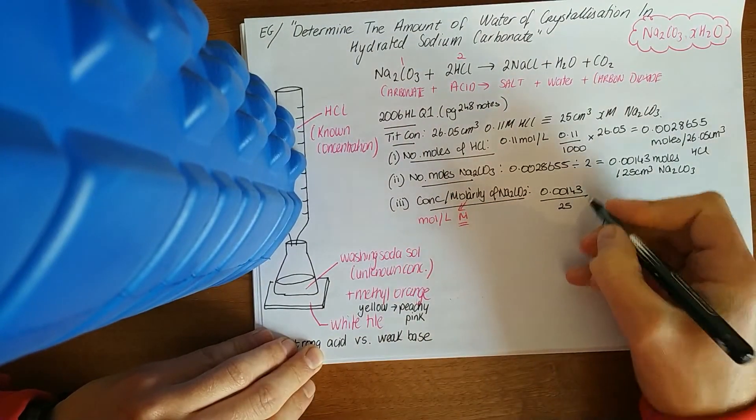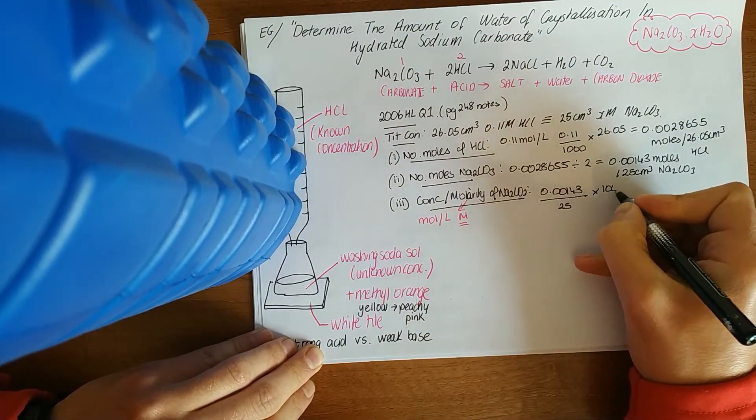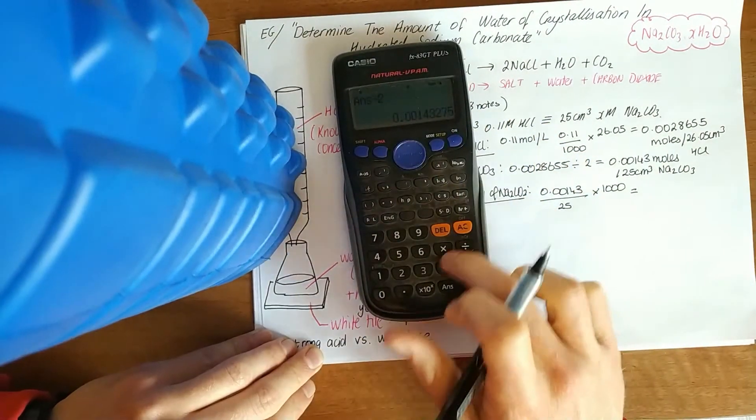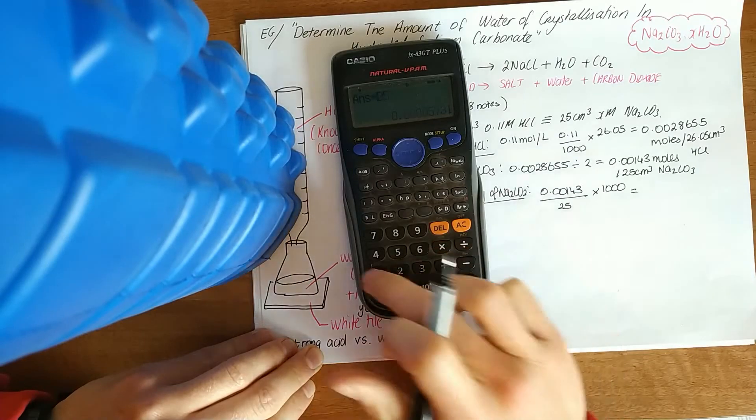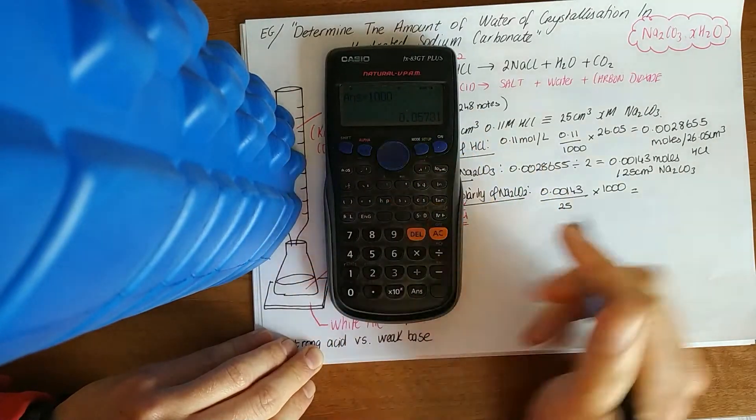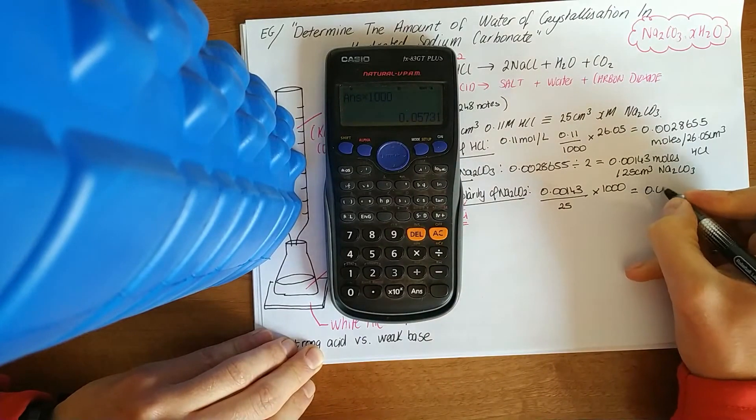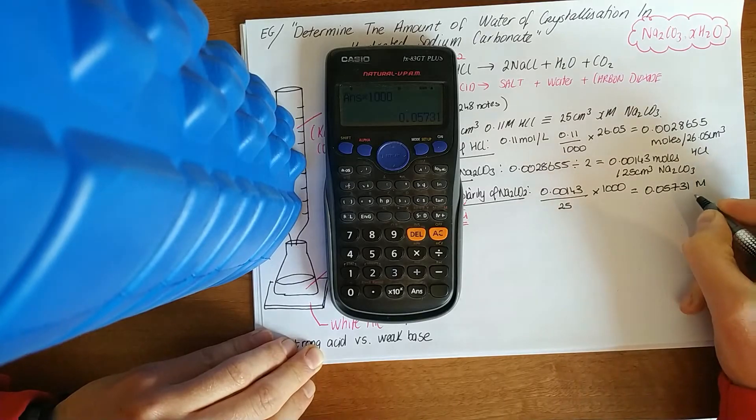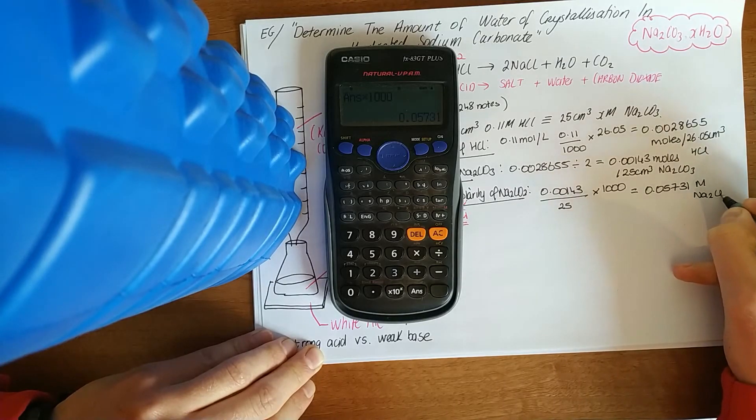We've got the number of moles in 25. To get the number of moles in a litre, times it by 1,000. So we haven't deleted that, divide it by 25, times it by 1,000. You should get a bigger number now. So 0.05731 moles per litre, and I'll put a big M of sodium carbonate.